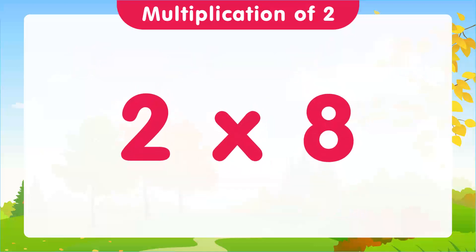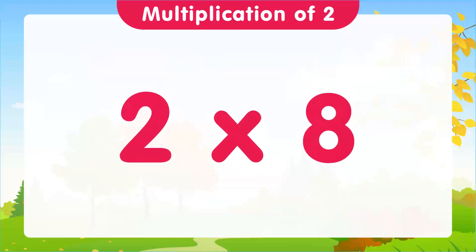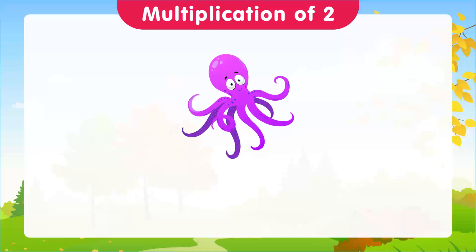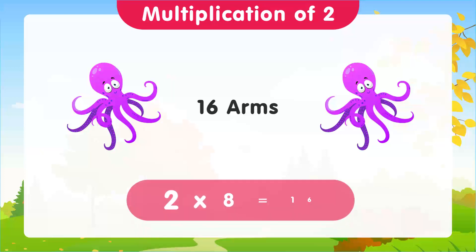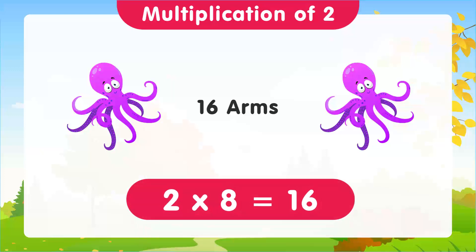Next up, 2 times 8. We're going to use octopuses. Imagine we have 2 octopuses. How many arms do they have between them? 16 arms. And that's our eighth multiplication: 2 times 8 is equal to 16.